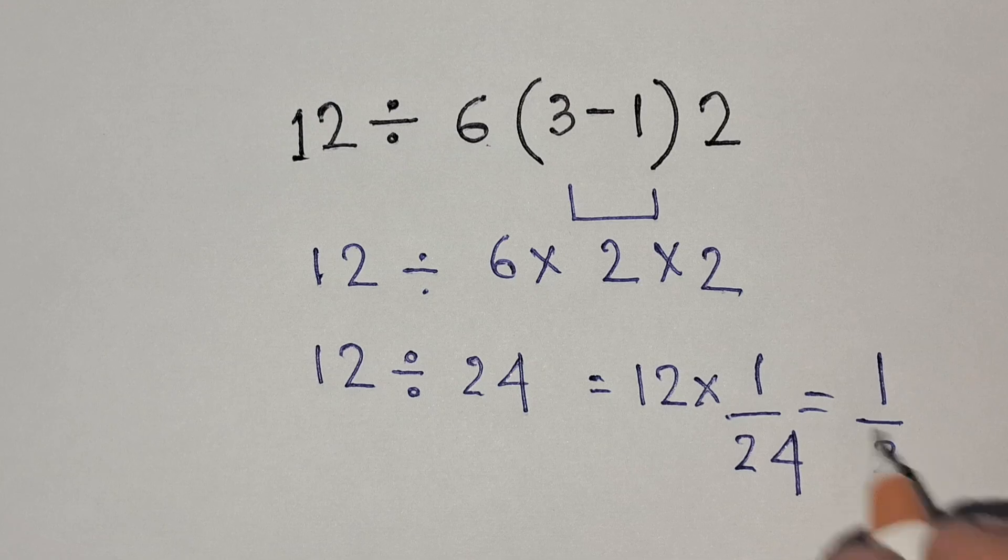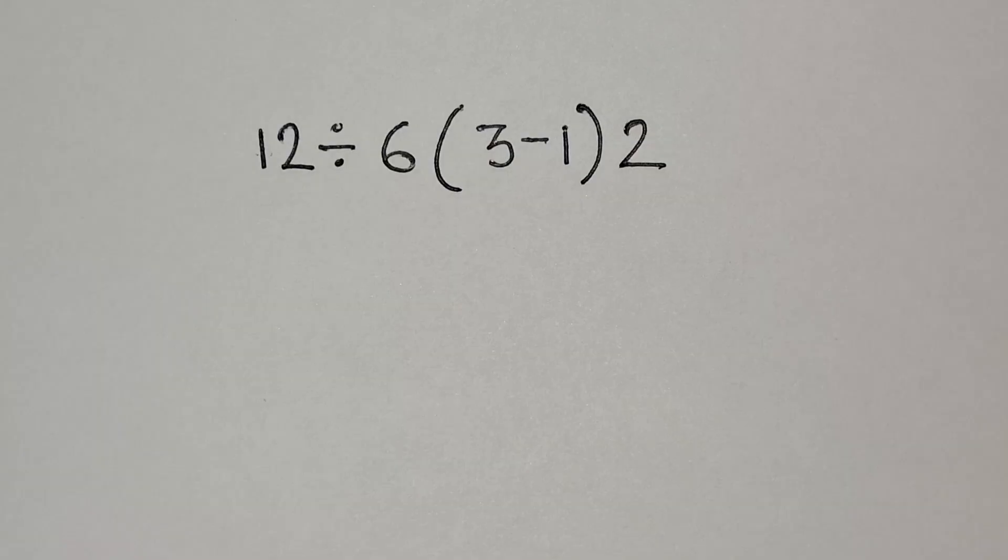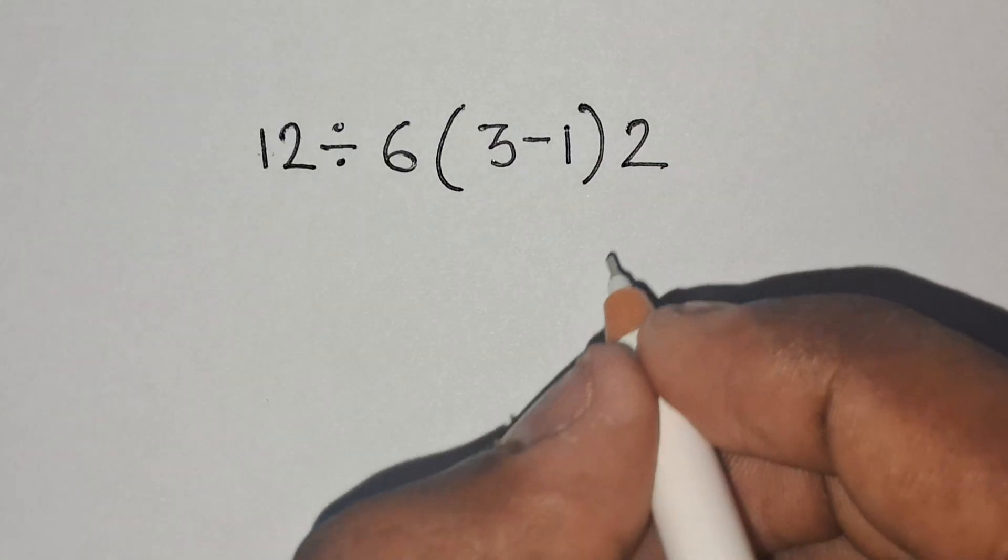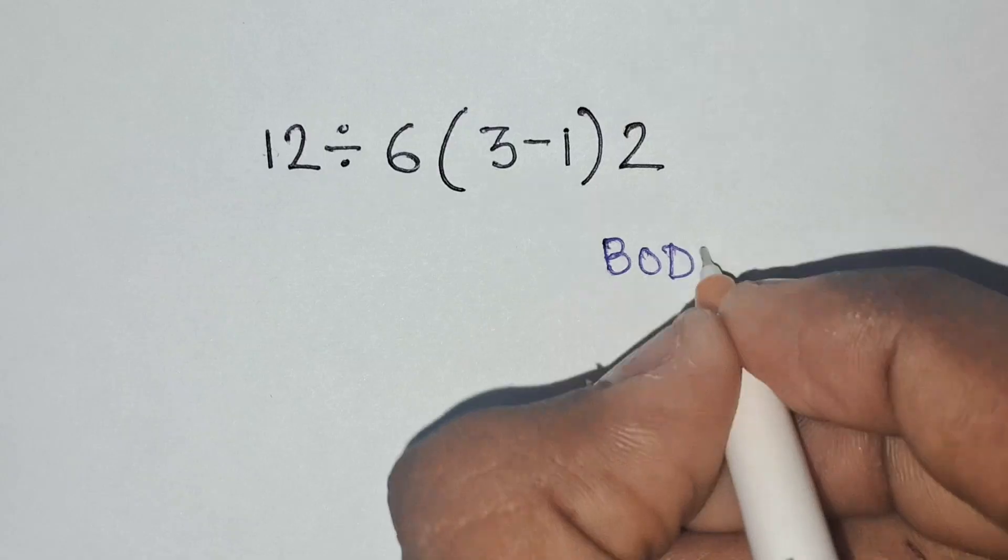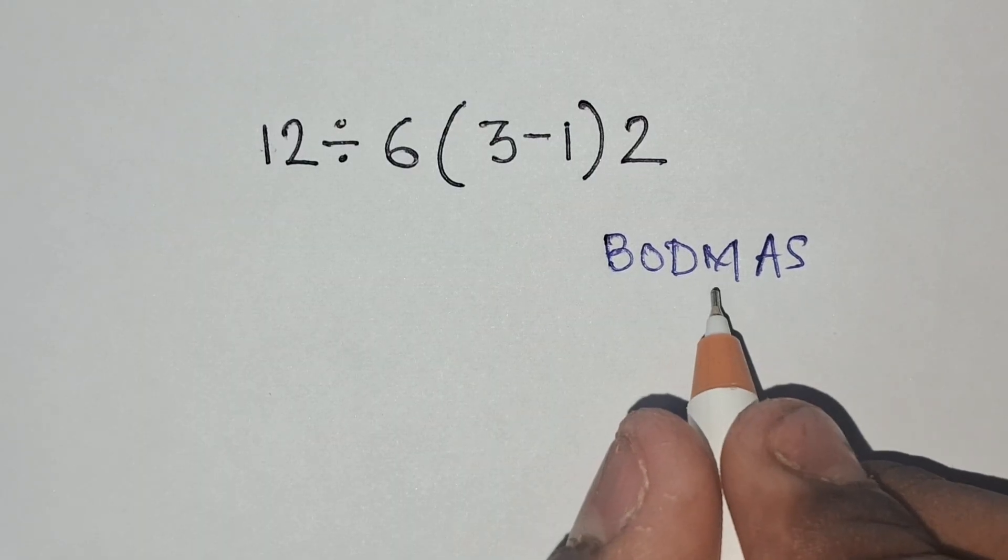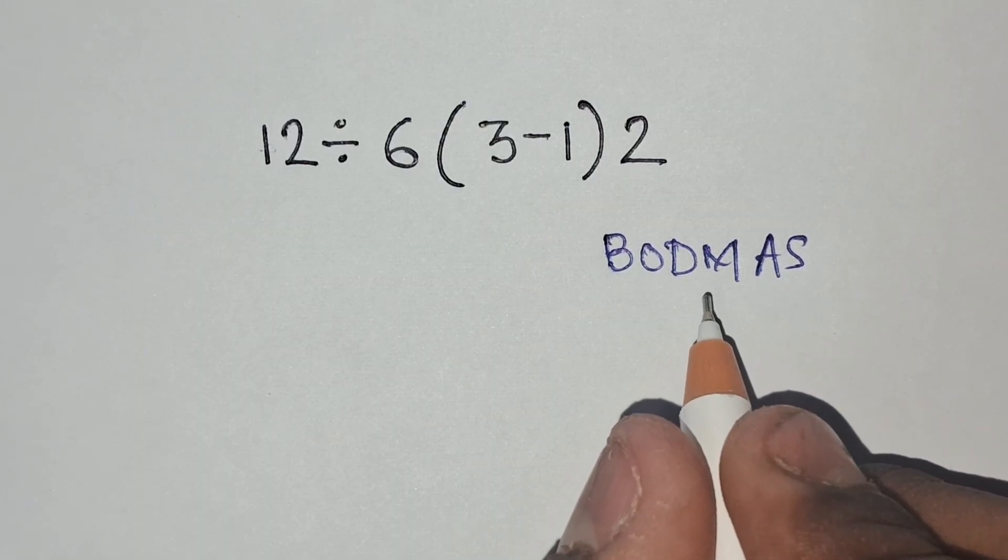But 1 by 2 is not the correct answer. We all know that according to the order of operation which is called BODMAS, the division and multiplication has same priority but we have to solve them from left to right.